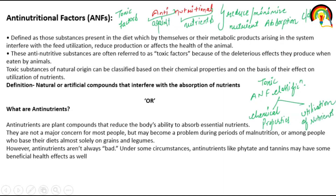Simply put, anti-nutritional factors are natural or artificial compounds that interfere with the absorption of nutrients. Yani, those compounds — whether natural or artificial — which interfere with nutrient absorption will reduce the absorption of nutrients in the body.